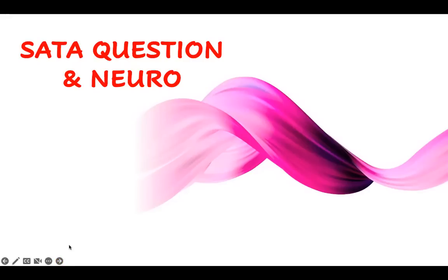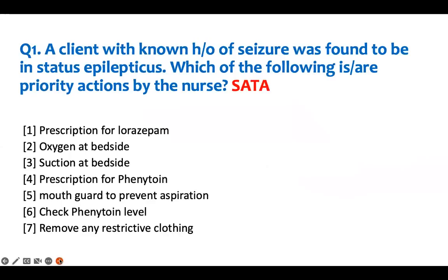I'll show you something: when you see a question on a seizure patient, what you should worry about. A client with a known history of seizure was found to be in status epilepticus. Which of the following are priority actions by the nurse?